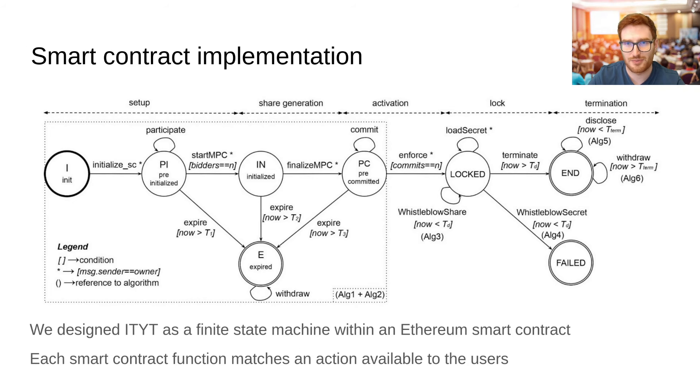Thanks, Dario. We designed ETYT as a finite state machine within an Ethereum smart contract, in which each smart contract function matches an action available to the users. As you can see from the top of the figure, the state machine is divided into five macro phases.